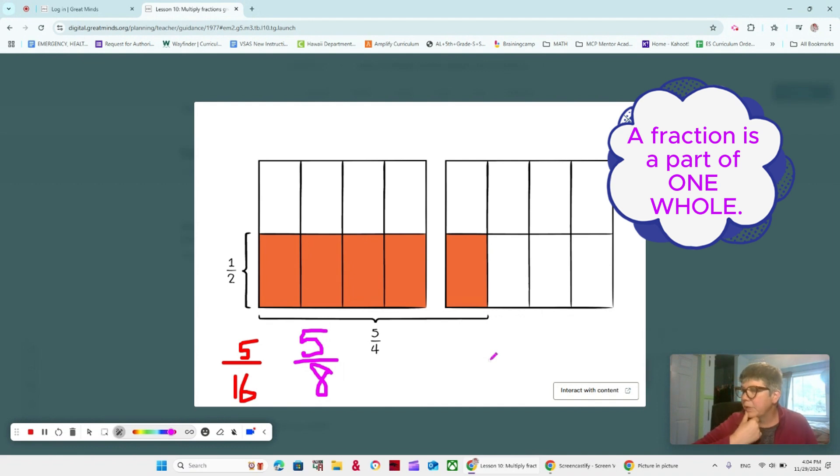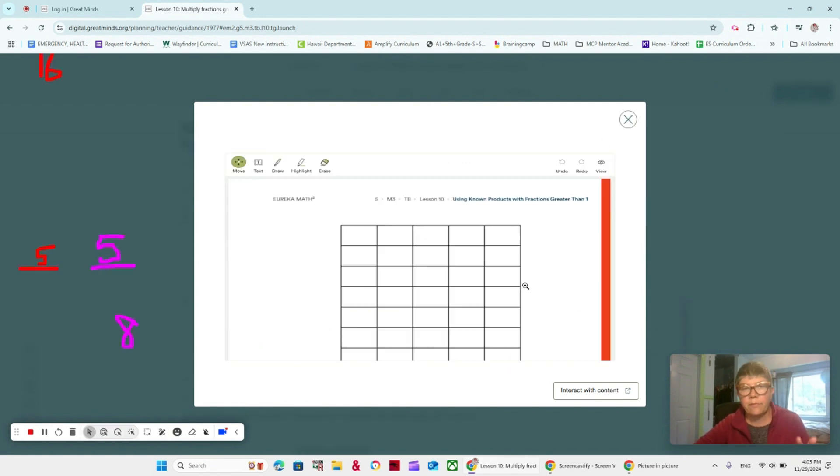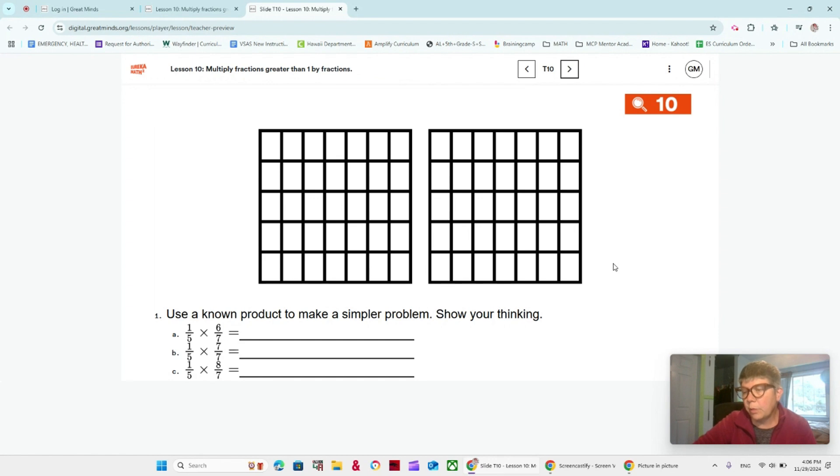When we use models to multiply a fraction greater than 1, we must be careful to use the correct number of units in one whole and not the total parts that we see. We have to think about the number in one whole. Today we're going to be using known products to multiply fractions greater than 1. This slide is called using known products with fractions greater than 1. Go ahead and tear that out. Put it into a dry erase sleeve or use it with a pencil.